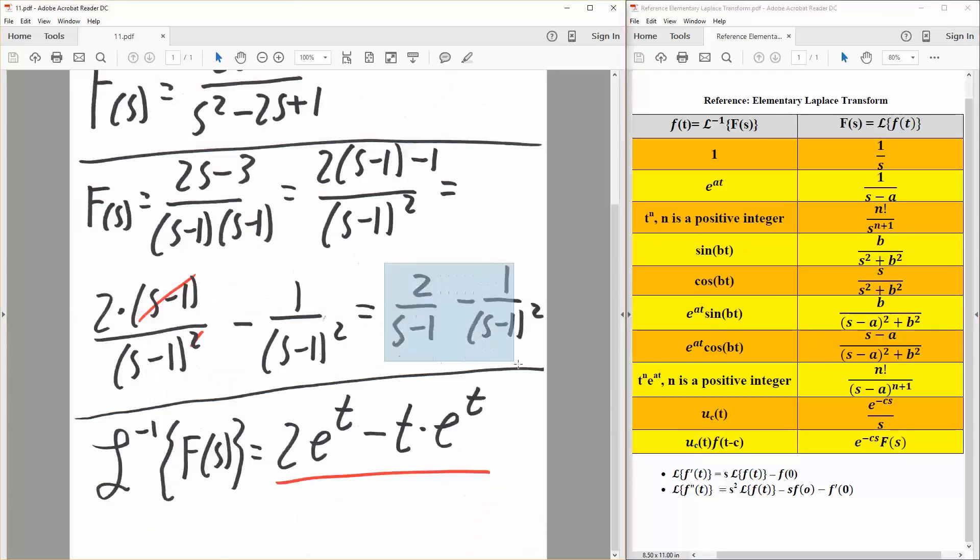Now we focus on this and see if there's a match with our table. With practice, we would know that it is. So we have 2 divided by s minus 1. Instead, we could say 2 times 1 divided by s minus 1, and that would be a match with this, where a would equal 1.